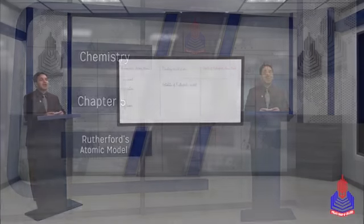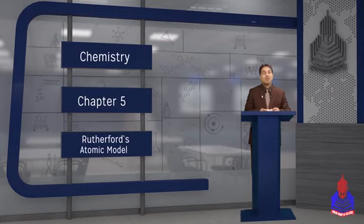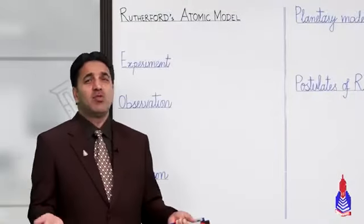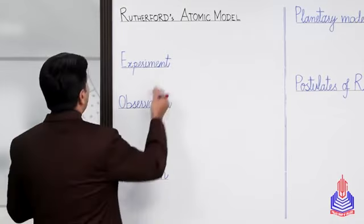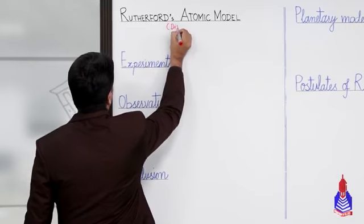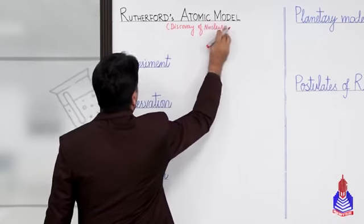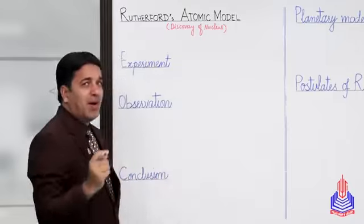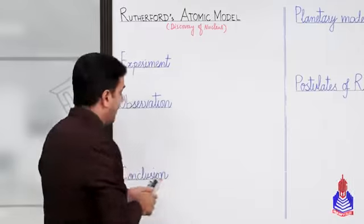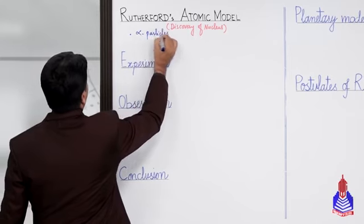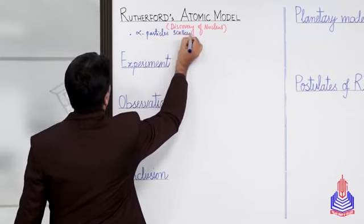بسم اللہ الرحمن الرحیم، السلام علیکم students۔ میں وجید علی کمبو ہوں۔ Chemistry first year، chapter 5 اور آج ہمارا topic ہے Rutherford atomic model، یعنی discovery of nucleus۔ اسے alpha particle scattering experiment بھی کہتے ہیں۔